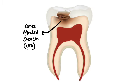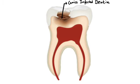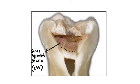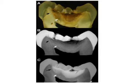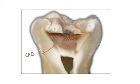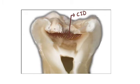Caries-affected dentine is the dentine found below the caries-infected dentine. It differs clinically as well as histologically from caries-infected dentine and can be distinguished using tactile and visual means. Caries-affected dentine has been subjected to its effects for much less time compared to its above layer.